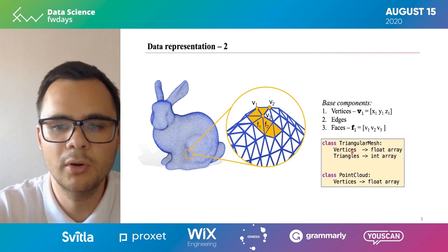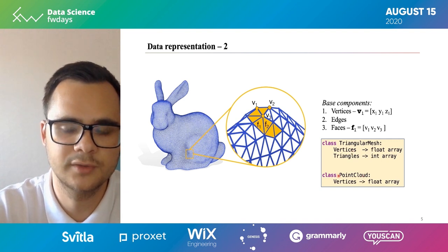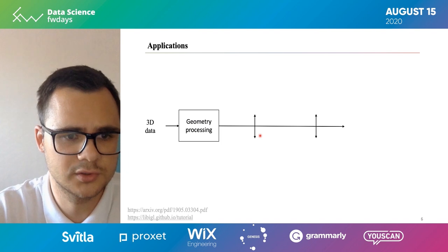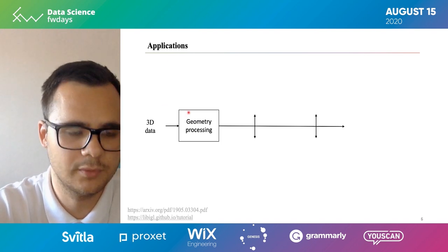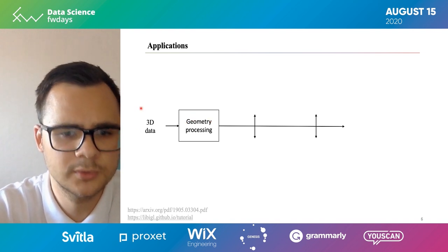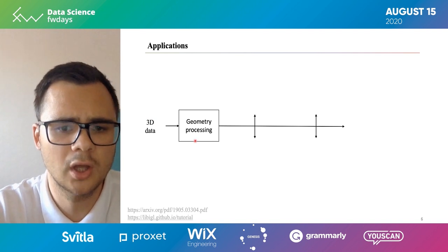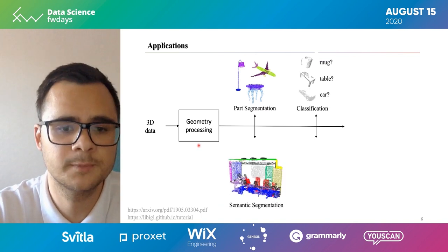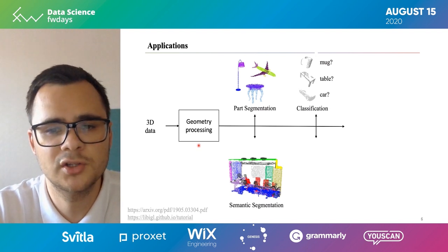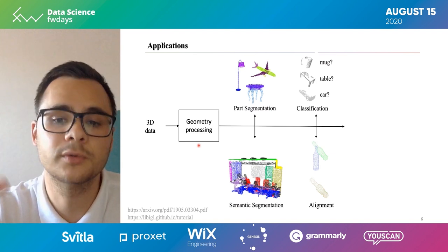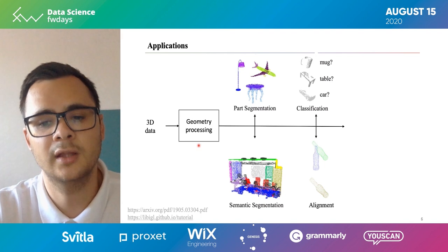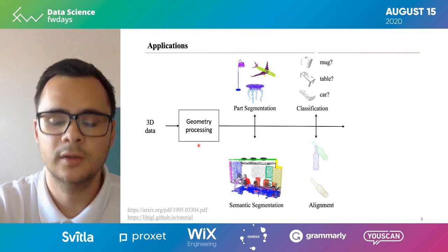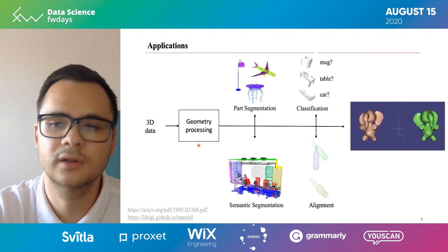The difference between a triangular mesh and a point cloud is that the point cloud doesn't have any triangles defined. Having such data we can use it for several applications. There is a simplified pipeline: you have 3D data as input, then a geometry preprocessing block. You can solve part segmentation, classification, or scene understanding with semantic segmentation. Or you can have multiple cameras, multiple views, and reconstruct the full object. The geometry processing also allows 3D alignment and object deformation, specifically non-rigid.